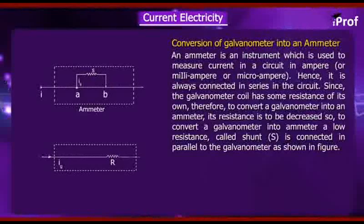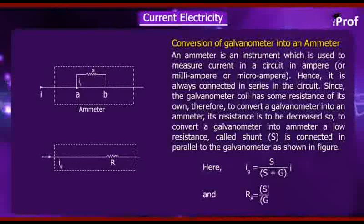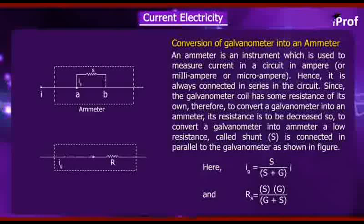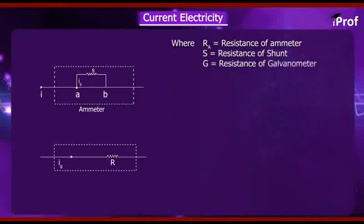So, to convert a galvanometer into ammeter, a low resistance called shunt is connected in parallel to the galvanometer as shown in figure. Here, I_G = S/(S+G) × I and R_A = SG/(G+S), where R_A = resistance of ammeter, S = resistance of shunt, G = resistance of galvanometer.